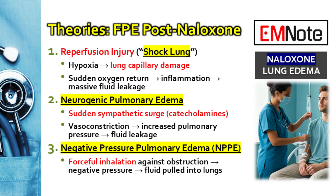Theory number two is called neurogenic pulmonary edema. In this scenario, the abrupt reversal from naloxone causes a massive sympathetic nervous system response. You get this huge surge of catecholamines — think adrenaline. This catecholamine surge spikes the pressure inside the lung's blood vessels so high that it literally forces fluid out into the lung tissue.